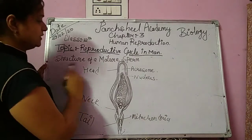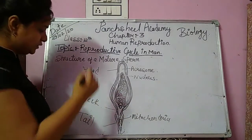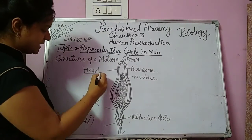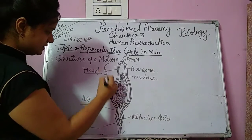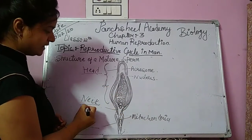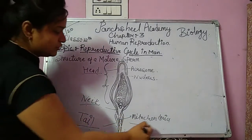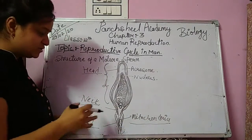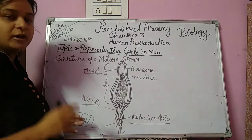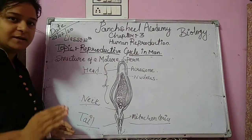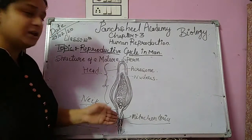Now we are discussing the structure of the mature sperm. Generally, the sperm is divided into three parts: head, neck, and tail. The head contains the nucleus, and the upper part is called the acrosome. Mitochondria are present in the tail. Due to the presence of mitochondria, the tail gets energy, and with the help of this tail, the sperm moves. So the sperm has motile capacity, but the egg does not.